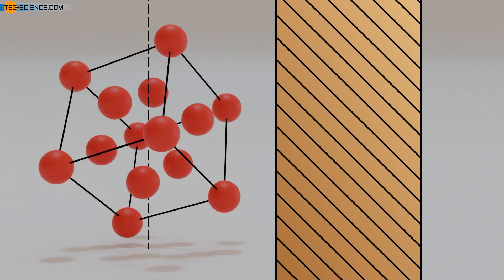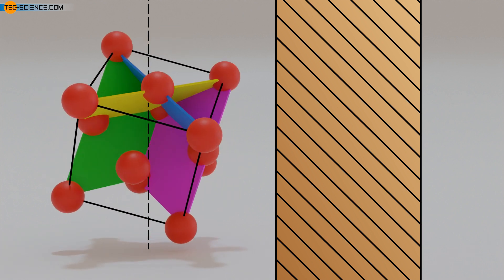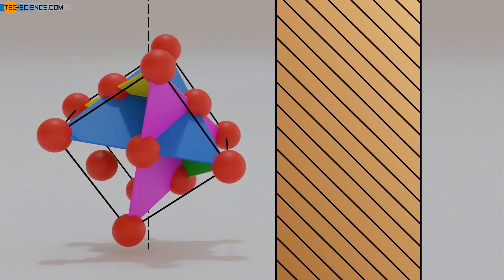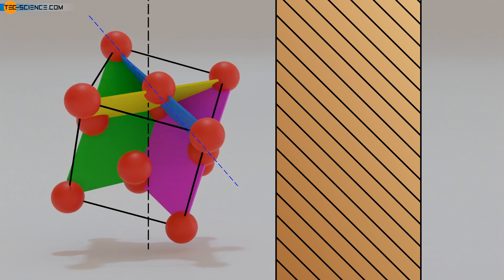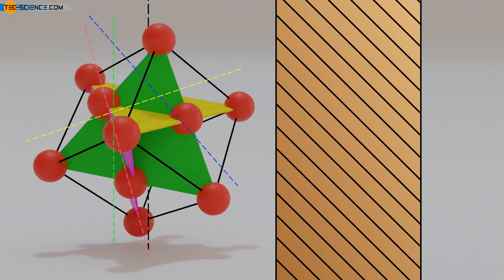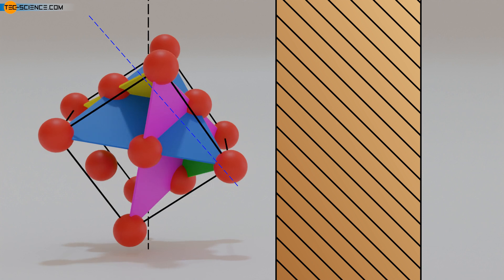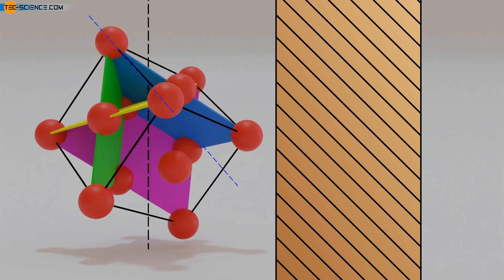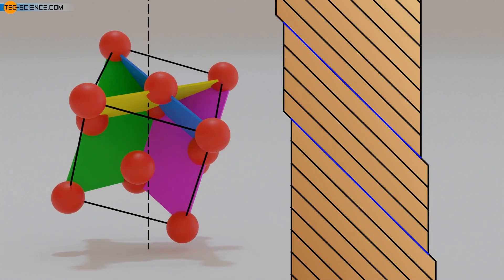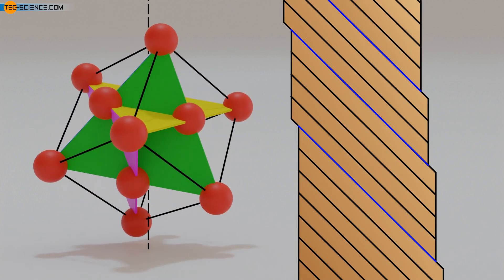In the copper single crystal shown, on the other hand, the face-centered cubic crystal lattice has been deliberately aligned with the tensile axis so that only one slip plane is oriented at an angle of about 45 degrees. The animation shows the orientation required for a face-centered cubic lattice: only the blue slip plane is at about 45 degrees, while the other main slip planes are oriented either too steeply or too flatly. As a result, only the favorably oriented slip plane is activated when the critical stress is reached, while shear stresses in the other slip planes remain below the critical shear stress. Since sliding takes place in only one slip system, this process is referred to as single gliding or easy gliding.